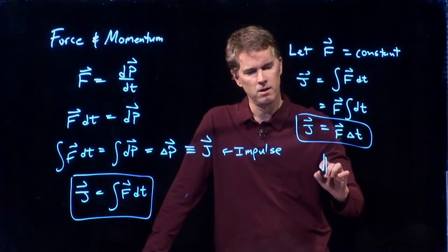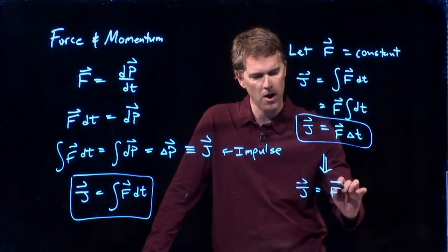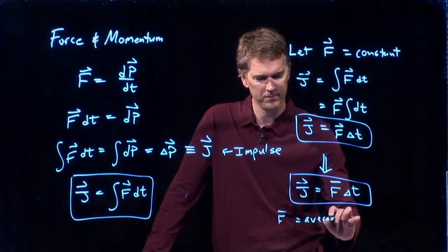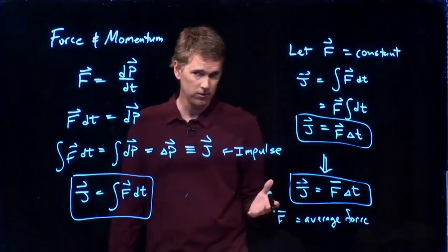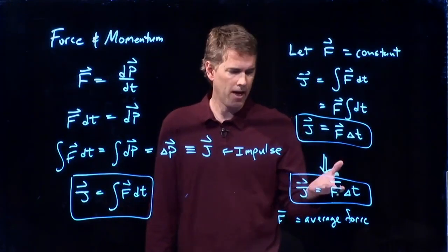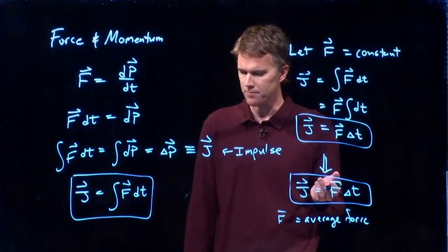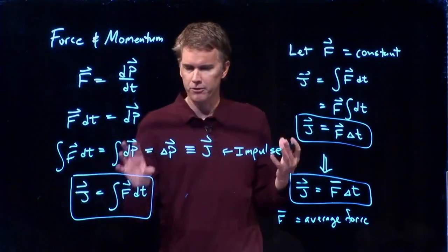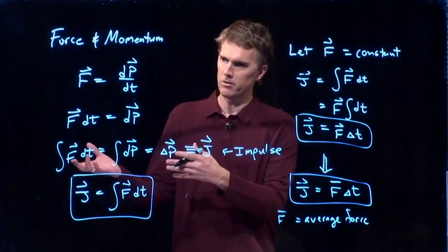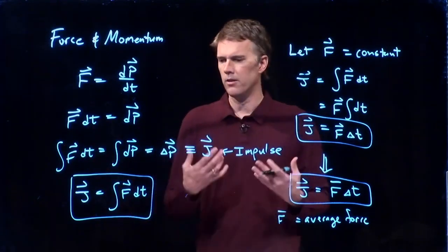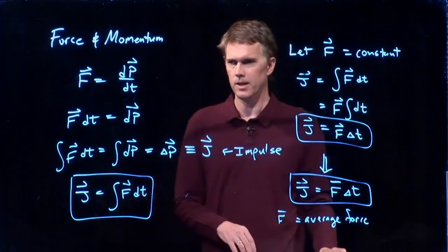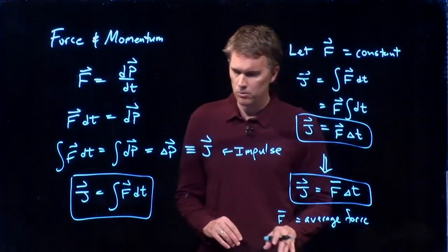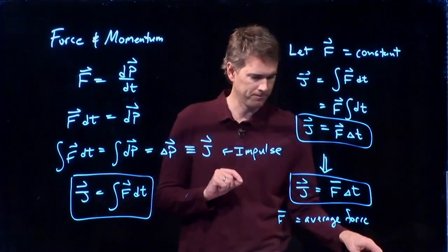Another way to write this is j is equal to f bar delta t. Where f bar is the average force. Still a vector. But we put the bar on top to indicate average. And that bar is going to double as both our average sign and our vector sign. Okay this is impulse. Impulse is the application of a force for some amount of time. And if I apply a force for some amount of time I can get things to move. I can make them accelerate. If they're accelerating for some amount of time they're going to pick up some velocity. Since p is just mv it's got to pick up some momentum. It has a change in momentum. So all this stuff is tied together through these relationships.